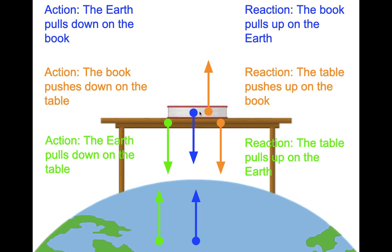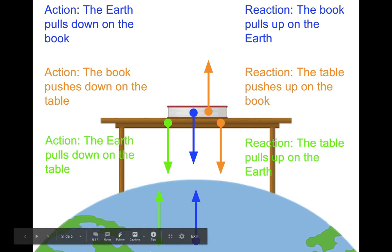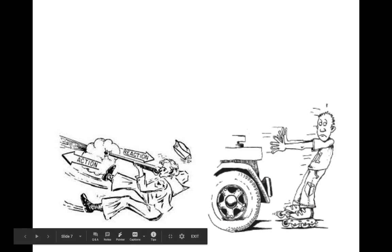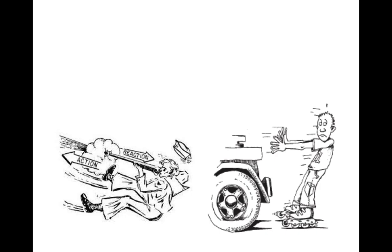Another force pair: the Earth pulls down on the table; the reaction would be the table pulling up on the Earth. Other action-reaction examples: a bullet is fired out of a gun — the gun pushes the bullet forward, and the reaction is the bullet pushes the gun backwards. That's why you have kickback on a gun.